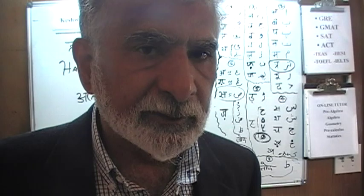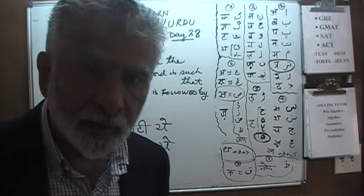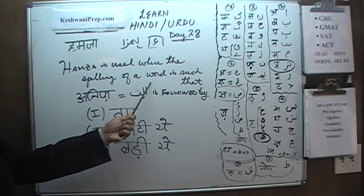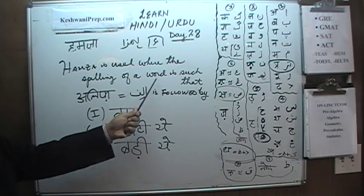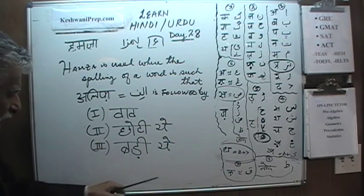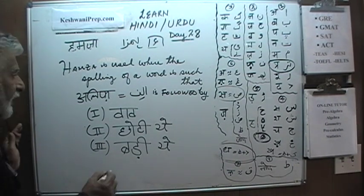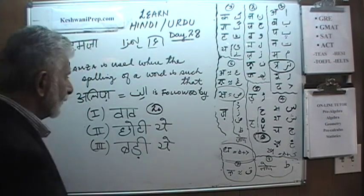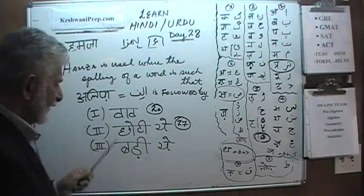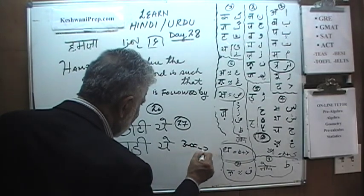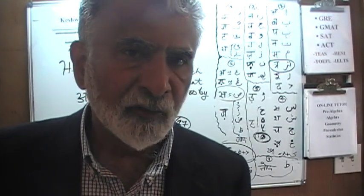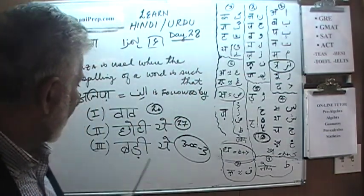Especially watch video 26, because that's where we explain in detail the concept we are dealing with — the concept of Hamza. As we talked about yesterday and the day before, Hamza is a letter, a symbol used in Urdu spelling where Aleph is followed by one of three letters: Wao, Chhoti Yeh, or Badi Yeh. Today, part 3 of 3, we look at examples where Aleph is followed by Badi Yeh — that's when Hamza is used.